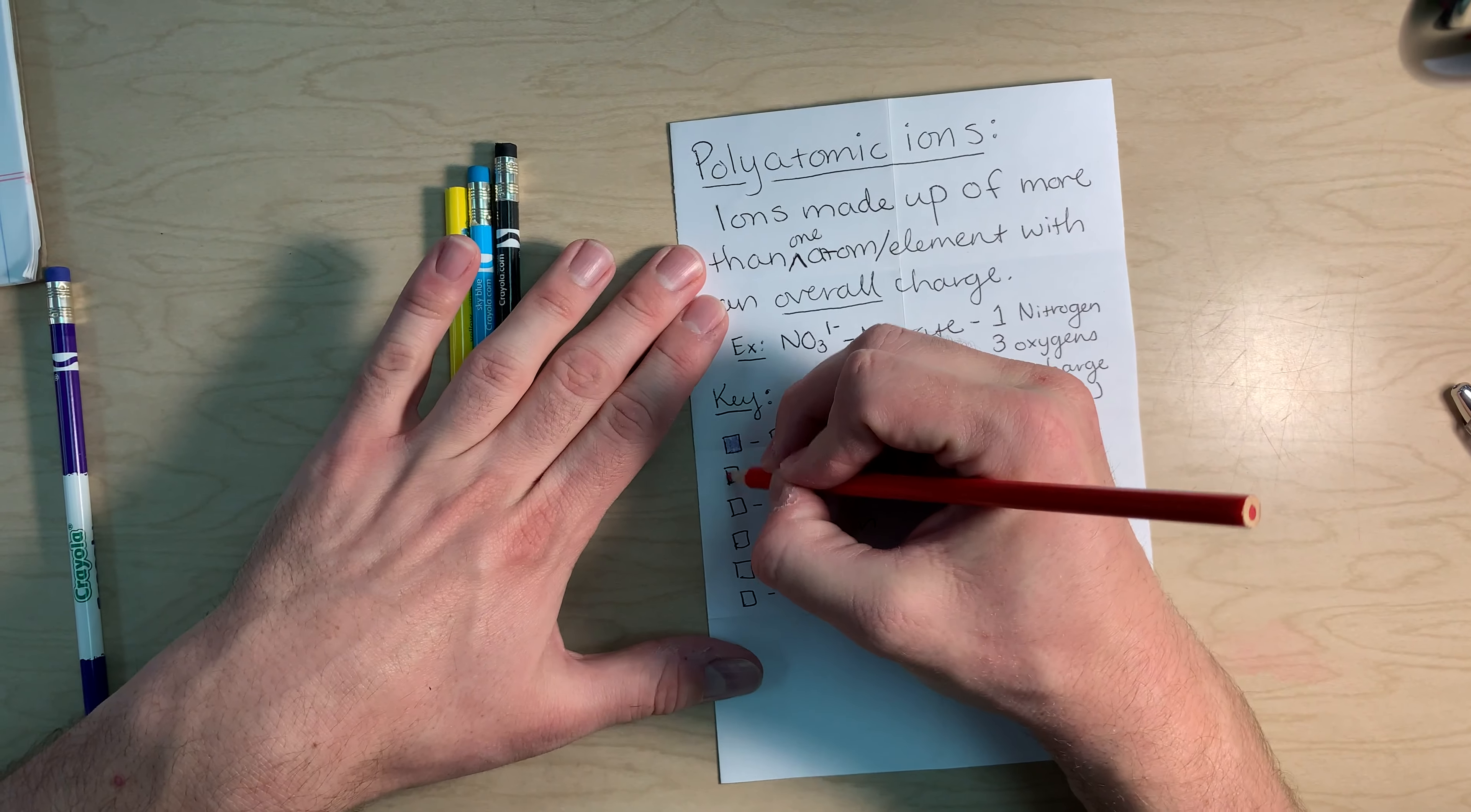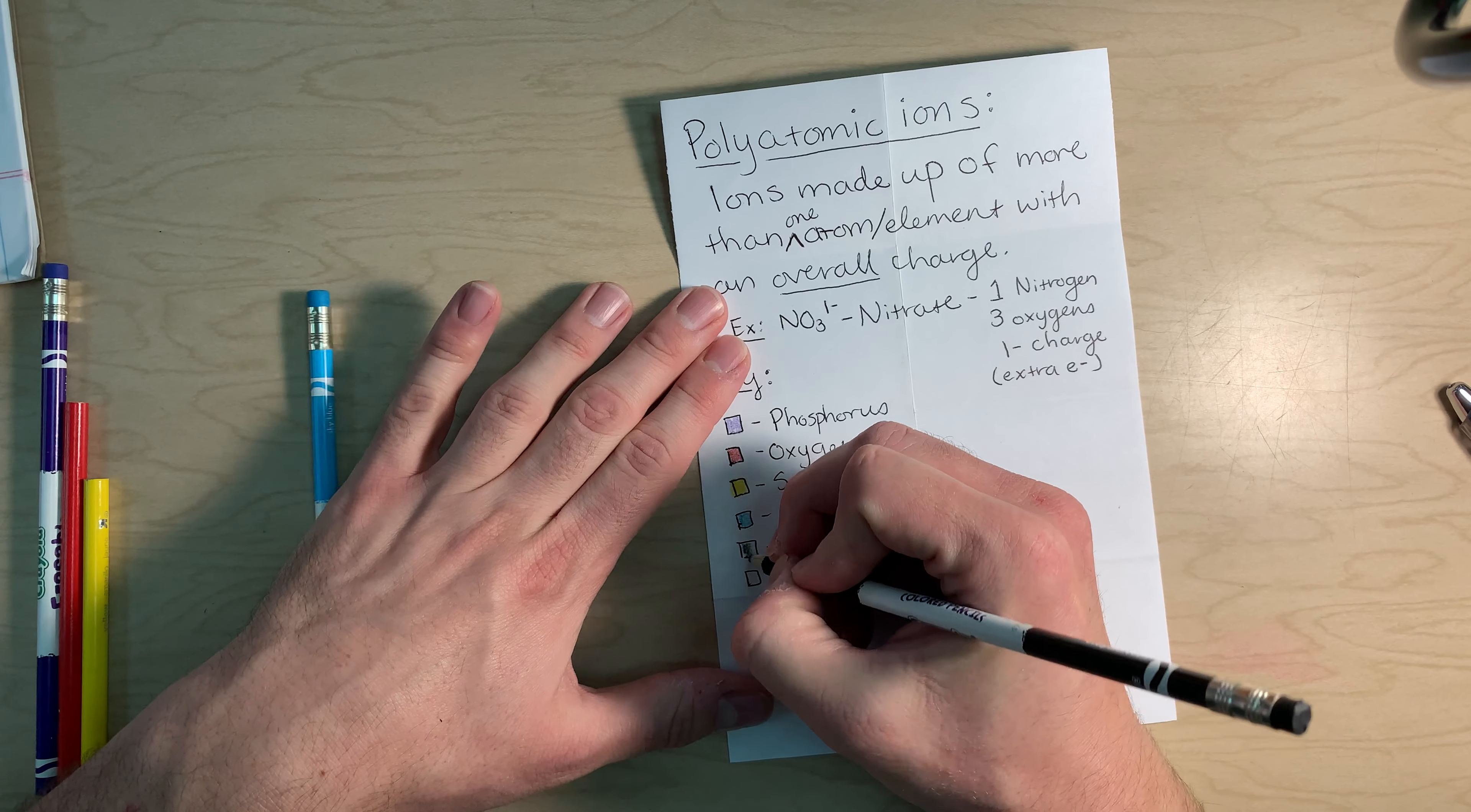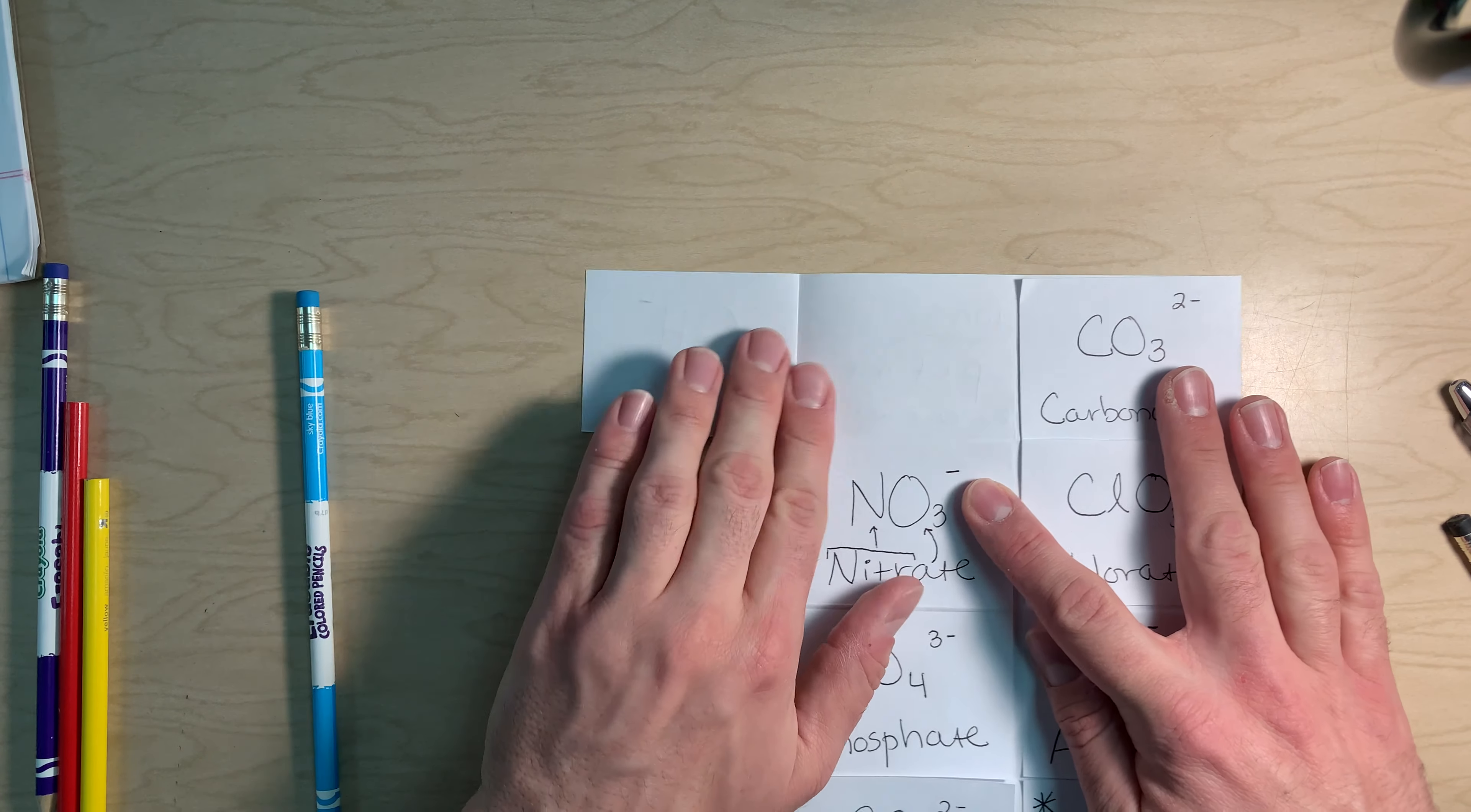For phosphorus, we are going to use purple. So I'm filling in that box. Oxygen, we're going to use red. Sulfur will be yellow. Nitrogen, light blue. And carbon is going to be black. And then we're going to leave hydrogen empty because we are going to use the color white for hydrogen. So go ahead and flip over to the front when you are ready.